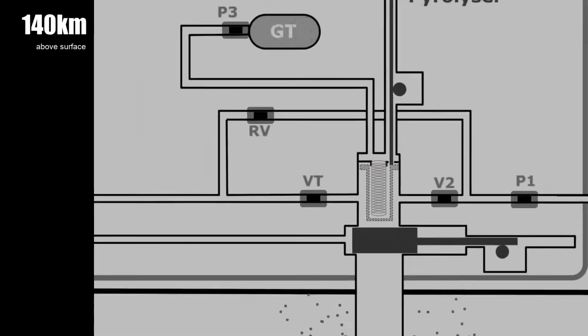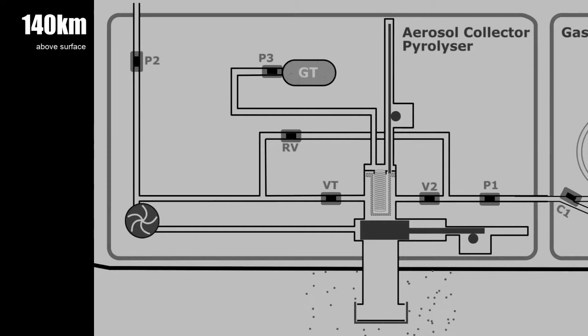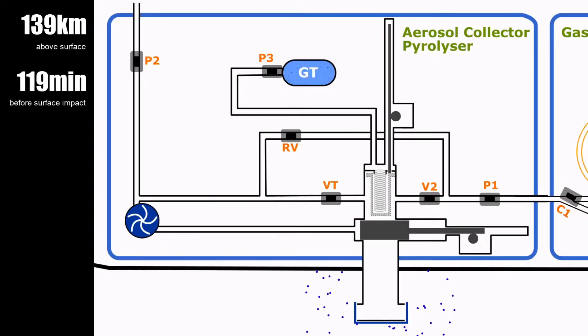At about 140 kilometers from the surface and 120 minutes before surface impact, the ACP is activated. The ceiling cover is released and the oven is vented through valve P2 and VT into Titan's atmosphere. This is to ensure that no foreign particles are in the oven when pyrolysis starts later on.